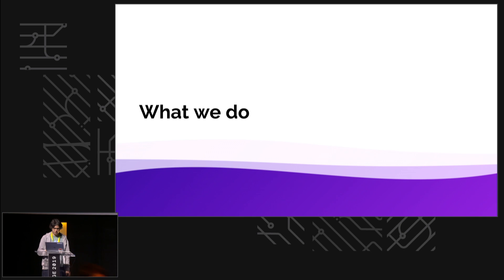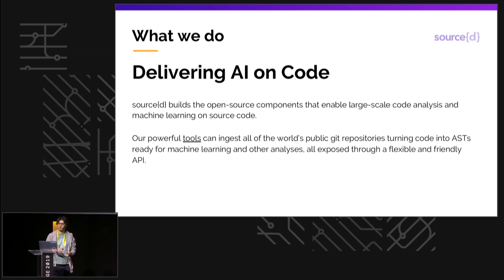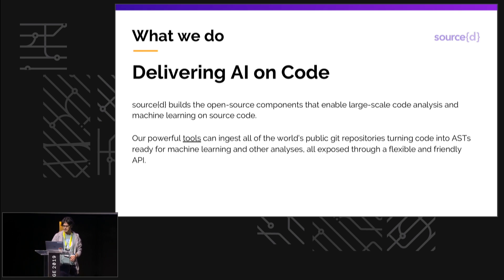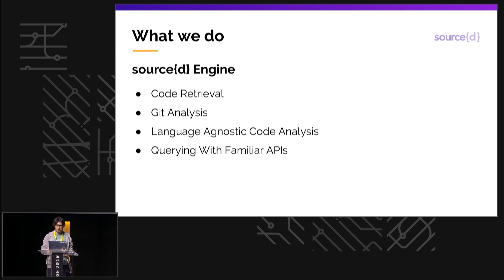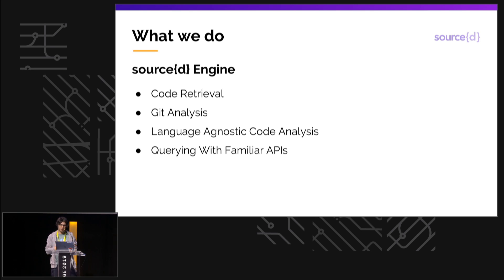Before going into GitBase itself, I'm going to tell you a little bit what we do so you understand why we did it. At Source, we make tools to do large-scale code analysis and machine learning on source code, and all of the projects I'm going to talk about are open source. All the tools that fit into searching Git repositories, analyzing source code, doing queries, or checking the language of a file are under an umbrella called the Source Engine. And GitBase is one of these.